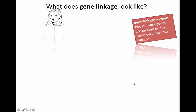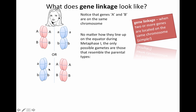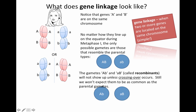What does gene linkage look like? If A and B are actually on the same chromosome, notice what happens. No matter how they line up during metaphase — whether this way or a different way — big A and big B are on the same chromosome, so they stay connected. Either way, all gametes will be big A big B or little a little b, because they're connected together regardless of how they line up during metaphase. These other combinations — big A little b and little a big B — don't seem likely; they're almost impossible in this situation. The only way those could be possible is if crossing over actually happens, creating what we call recombinants.